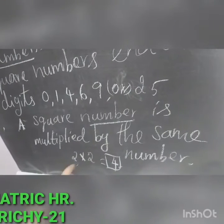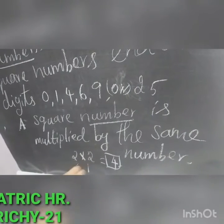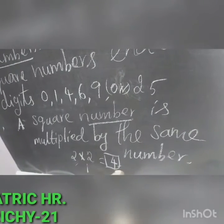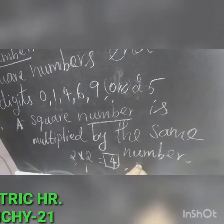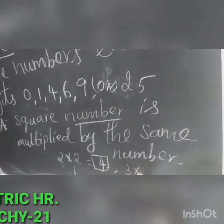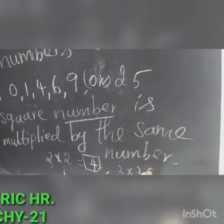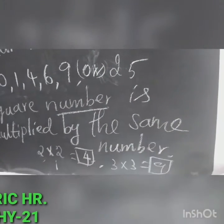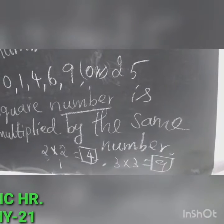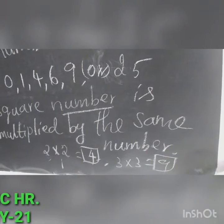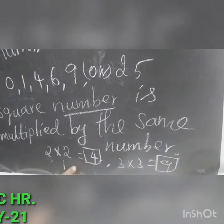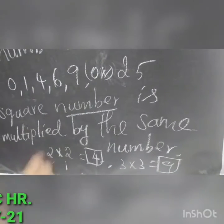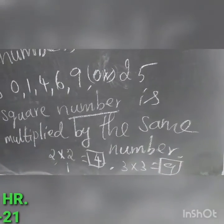So these are all square numbers. 3 multiplied by 3 is 9, so 9 is also a square number. Then 4 multiplied by 4 is 16, and so on.